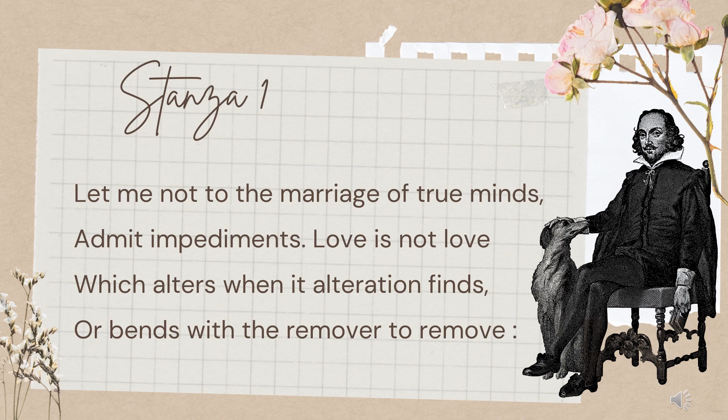This is its pattern. Now note the rhyme scheme, because you have a critical appreciation and it will help you — it may be asked as an objective question as well. The rhyme scheme of this sonnet is A-B-A-B, C-D-C-D, E-F-E-F, G-G. It is written in iambic pentameter — spelling: I-A-M-B-I-C, P-E-N-T-A-M-E-T-E-R.